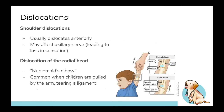Shoulder dislocations usually occur anteriorly, with the humerus moving forward due to ligament structure around the glenohumeral joint. Since the axillary nerve runs near the surgical neck region, an anterior dislocation could affect it, causing loss of sensation in the regimental patch. Radial head dislocation in children — nursemaid's elbow — happens when children are pulled by the arm, slipping the radius out of its annular ligament due to soft, flexible ligaments.